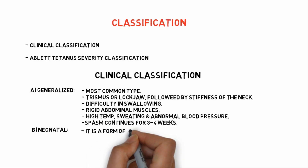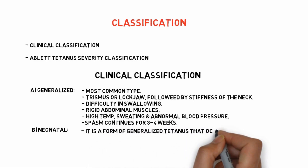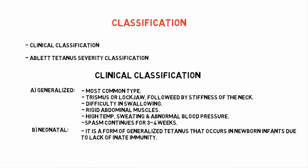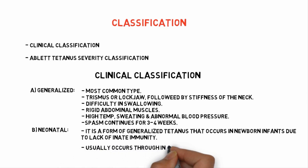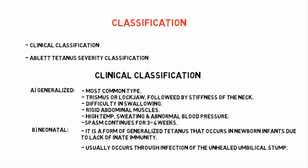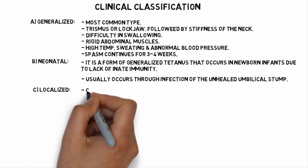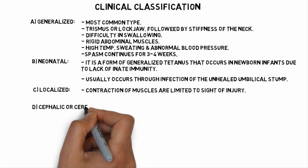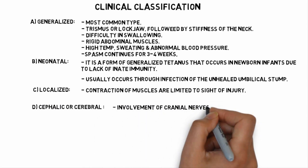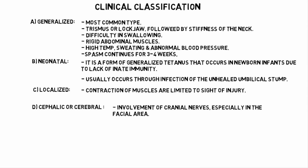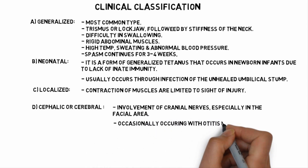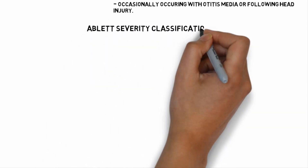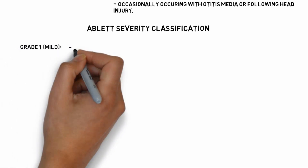The second type is neonatal, which is a form of generalized tetanus that occurs in newborn infants due to lack of innate immunity, usually through infection of the unhealed umbilical stump. The third type is localized, where contractions of muscles are limited to the site of injury. The fourth type is cephalic or cerebral, involving cranial nerves, especially in the facial area, like the trigeminal and facial nerve, occasionally occurring with otitis media or following a head injury.